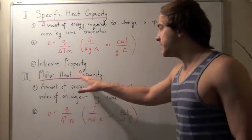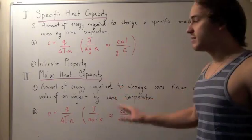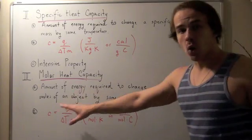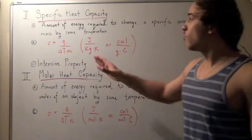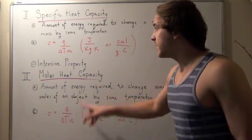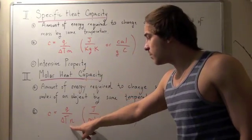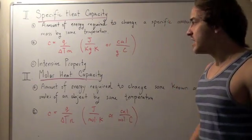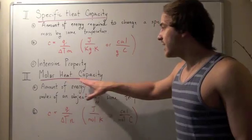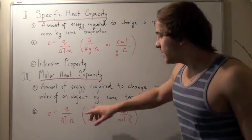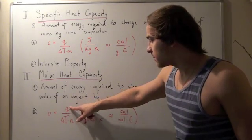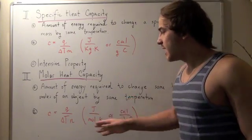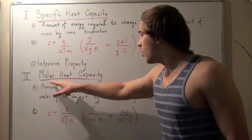Molar heat capacity is the amount of energy required to change some known amount of moles of an object by some temperature. The formula is almost the same as specific heat capacity except mass is replaced with number of moles, and the kilogram or gram unit is replaced by moles. This is also an intensive property because we divide one extensive property by another extensive property — the Q-to-moles ratio stays the same, so the molar heat capacity C also stays the same.